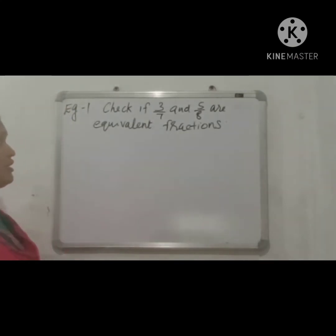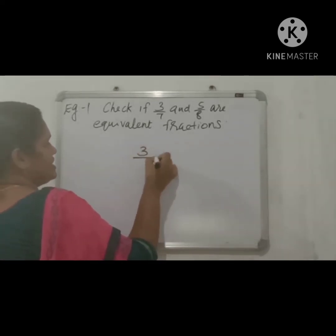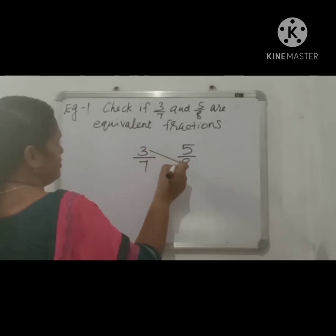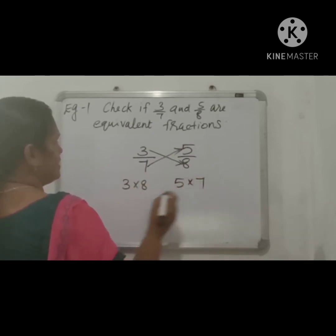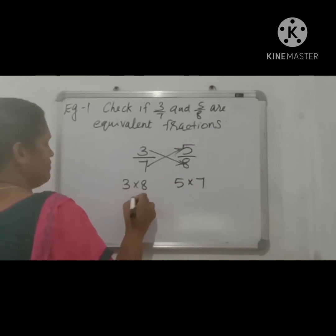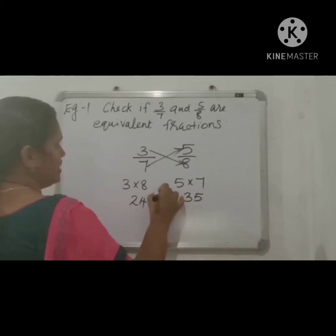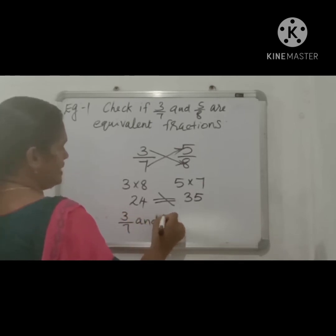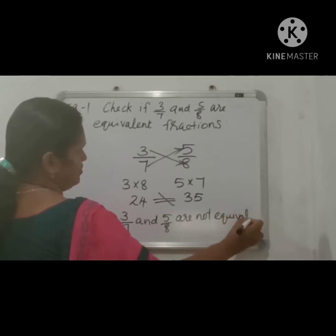Example 1: Check if 3 by 7 and 5 by 8 are equivalent fractions. Take the cross product: 3 into 8 and 7 into 5. 3 into 8 equals 24 and 5 into 7 equals 35. They are not equal, so therefore 3 by 7 and 5 by 8 are not equivalent fractions.